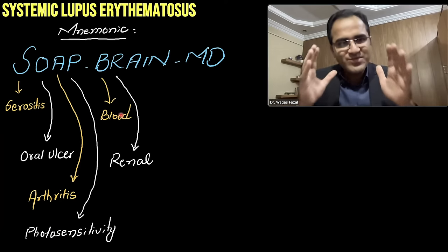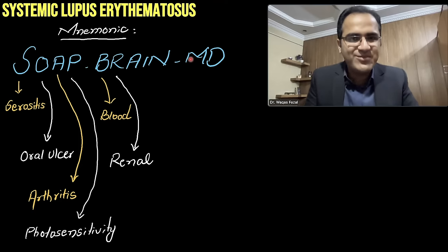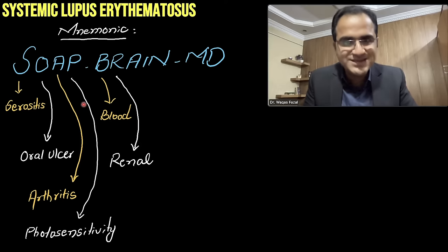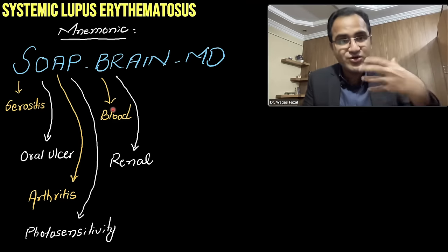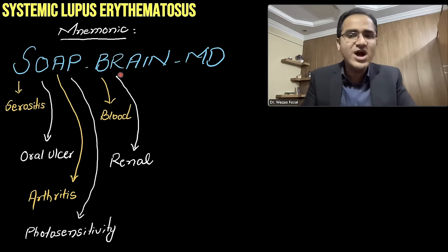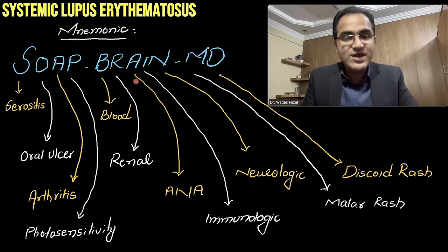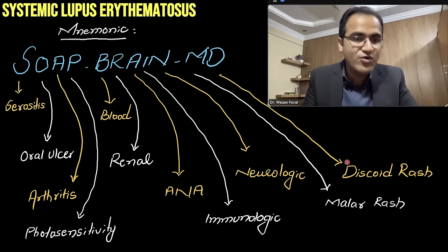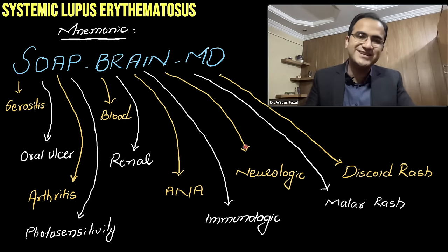A simple mnemonic to remember all these manifestations is SOAP BRAIN MD: S for serositis (pleuritis, pericarditis), O for oral ulcers, A for arthritis, P for photosensitivity, B for blood involvement (autoimmune hemolytic anemia, anemia of chronic disease), R for renal involvement, A for ANA (anti-nuclear antibodies), I for immunologic phenomena, N for neurologic involvement, M for malar rash, D for discoid rash — all seen in SLE.